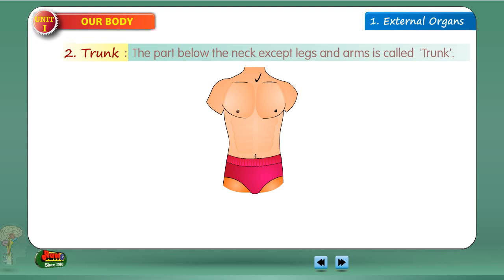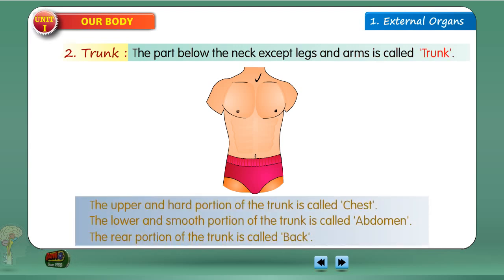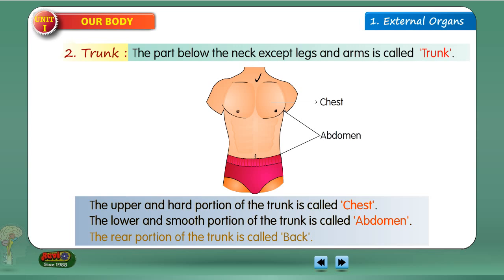The part below the neck except legs and arms is called trunk. The upper end hard portion of the trunk is called chest. The lower end smooth portion of the trunk is called abdomen. The rear portion of the trunk is called back.